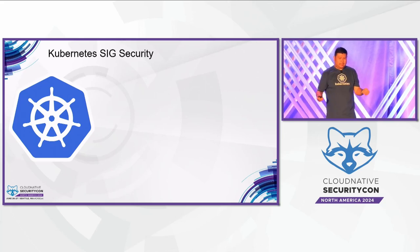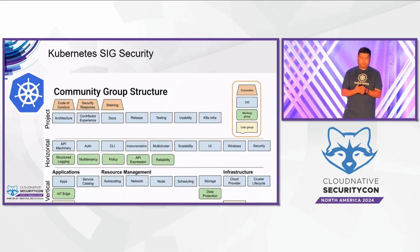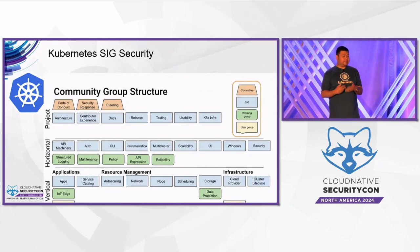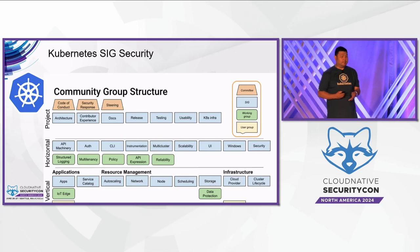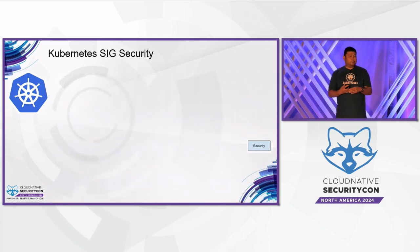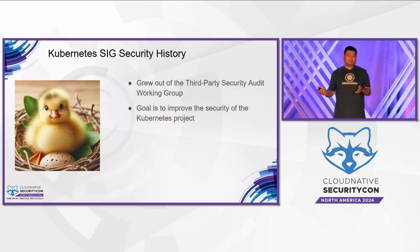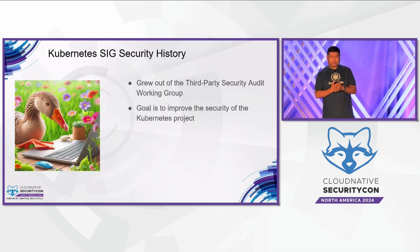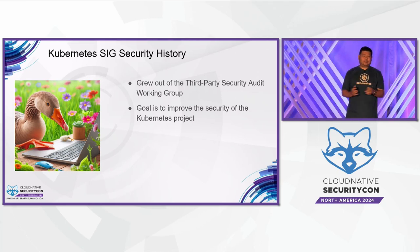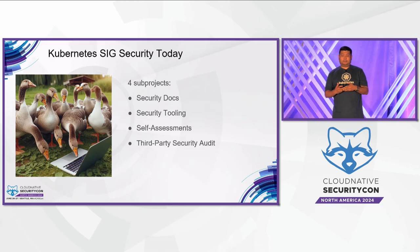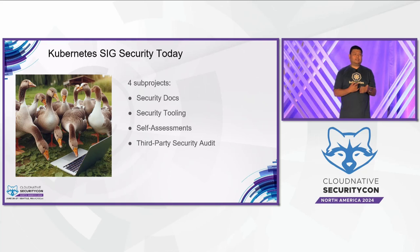Let's do a little review. Kubernetes is organized into 24 special interest groups, commonly referred to as SIGs, and all of them have a common purpose to advance the project. I'm here to show a few examples of what Kubernetes SIG Security has done to improve the security posture of the project. SIG Security officially started in 2020, and it grew out of a working group for the third-party security audit published in 2019. SIG Security's sole mission is to make Kubernetes more secure, and the SIG has grown into four subprojects: security docs, security tooling, self-assessment, and third-party security audit.